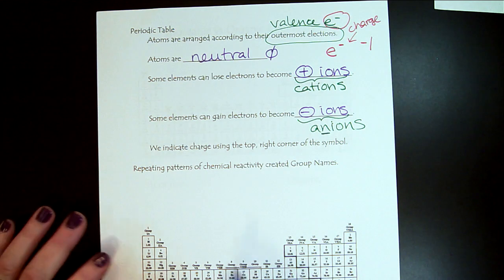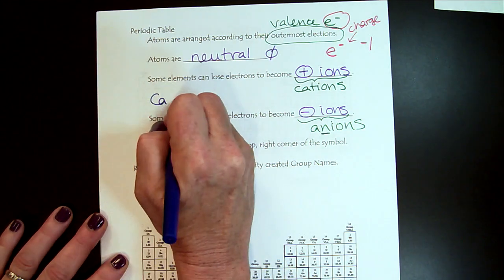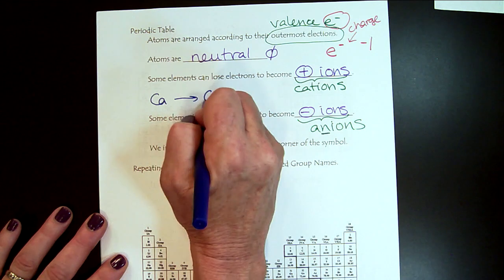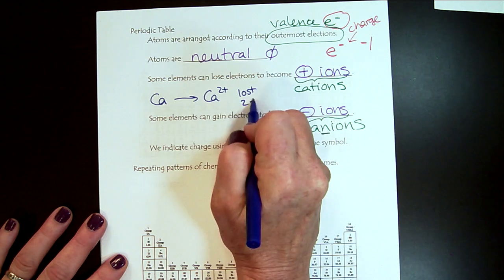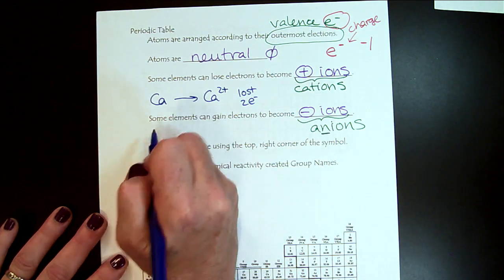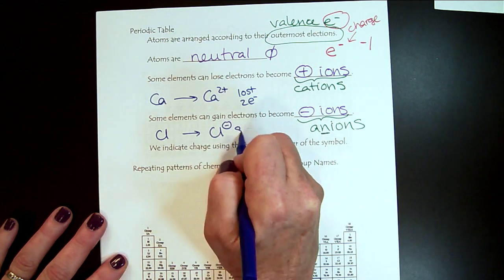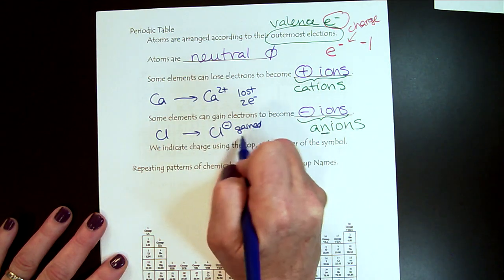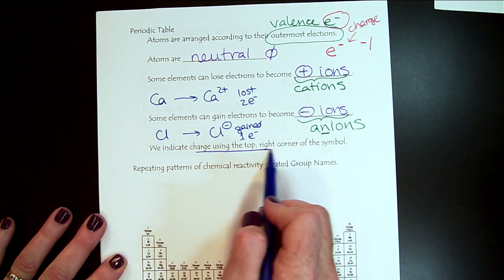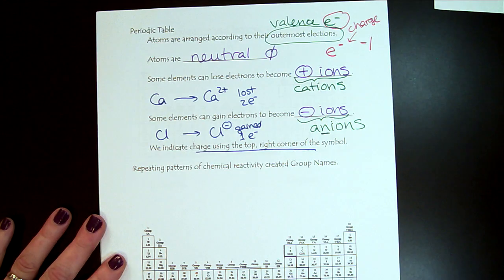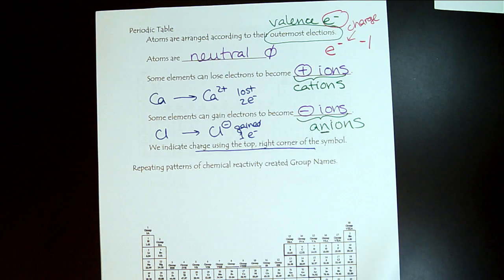If we look, for example, calcium is an element and it can become calcium two plus. It lost two electrons. A chlorine atom can become chloride. It gained one electron. Remember that we'll always put the charge in that top right corner to distinguish between an atom and an ion.